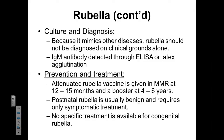To diagnose rubella, we typically have a tough time because rubella mimics other diseases, and it's very difficult to diagnose on clinical grounds alone. To confirm a rubella diagnosis, we're going to need to use an IgM immunoglobulin M antibody ELISA test — just like with measles — or we could look for latex agglutination. To prevent rubella, we focus on vaccinations. We have an attenuated rubella vaccine that's part of the MMR, administered at 12 to 15 months and boosted between 4 to 6 years. Postnatal rubella is typically benign and requires only symptomatic treatment. There is no specific treatment available for congenital rubella.